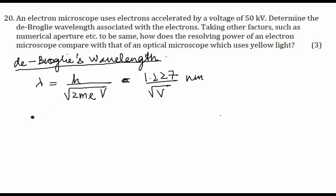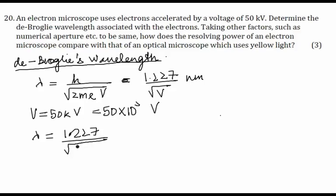So let's calculate this. We are given a voltage of 50 kV which is nothing but 50 times 10 raised to the power 3 volts. So the wavelength would be 1.227 upon root of 50 times 10 raised to the power 3 nanometers. We would get this value approximately equal to 5.5 times 10 raised to the power minus 12 nanometers.